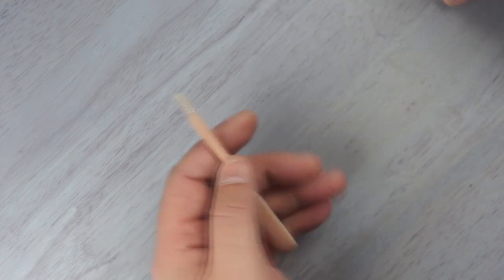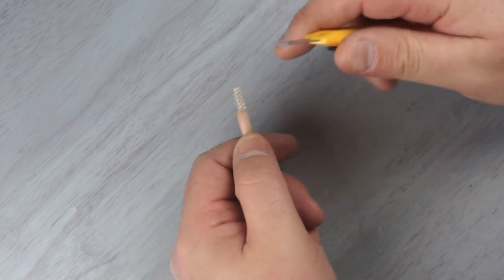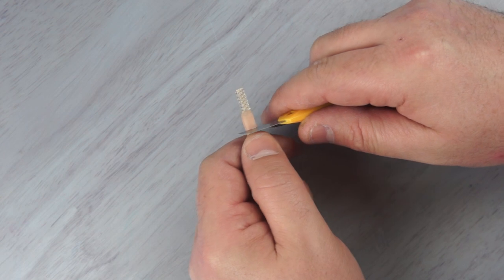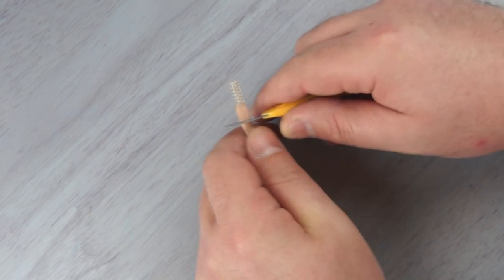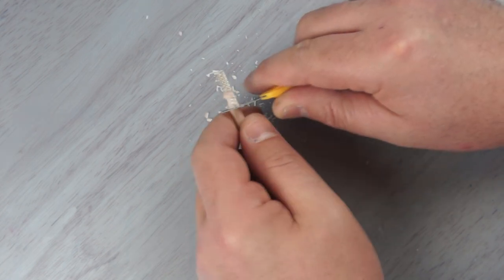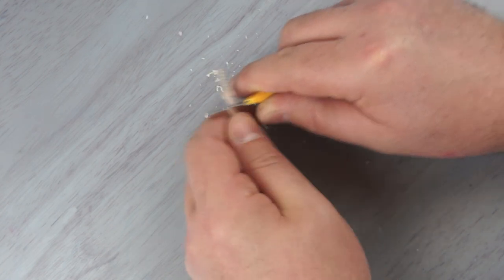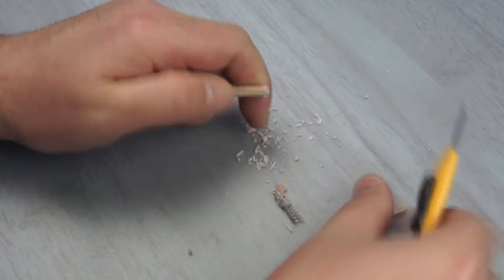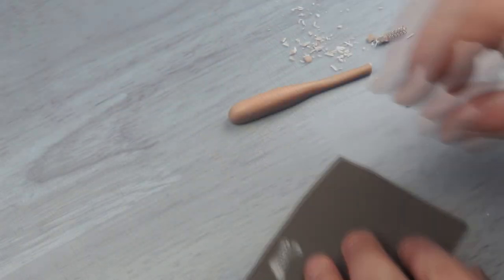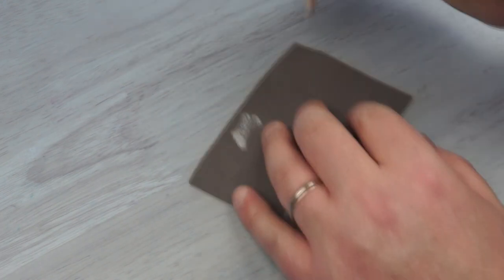When I was happy with the finish, I marked the final length of the tail by scoring through the outer skin, then carving away, and finally snapping off the excess. Then to flatten off, I used a piece of wet and dry sandpaper.